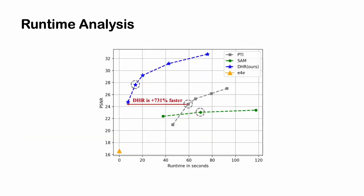One main concern of optimization-based methods is time consumption. Previous methods like PTI and SAM cost more than one minute per image, which is hardly applied in practice. Our DHR costs only 7 seconds to achieve state-of-the-art results and 13 seconds under our default settings.